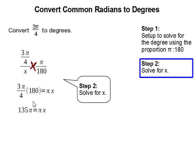Then that simplifies out to be 135 pi. Then since we have pi on both sides of the equal sign, we can cross them out. And x is equal to 135 degrees. And that completes our problem.